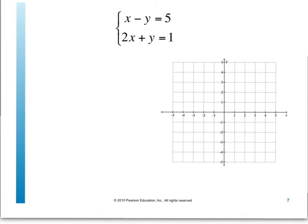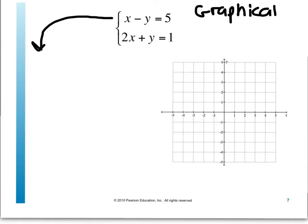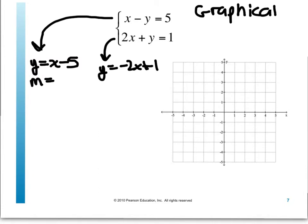Let's solve x minus y equals 5 and 2x plus y equals 1 by graphing. One of the quickest ways to graph lines is to find the slope and y-intercept by solving each equation for y in y equals mx plus b form. For the first equation, y equals x minus 5. For the second equation, y equals negative 2x plus 1.